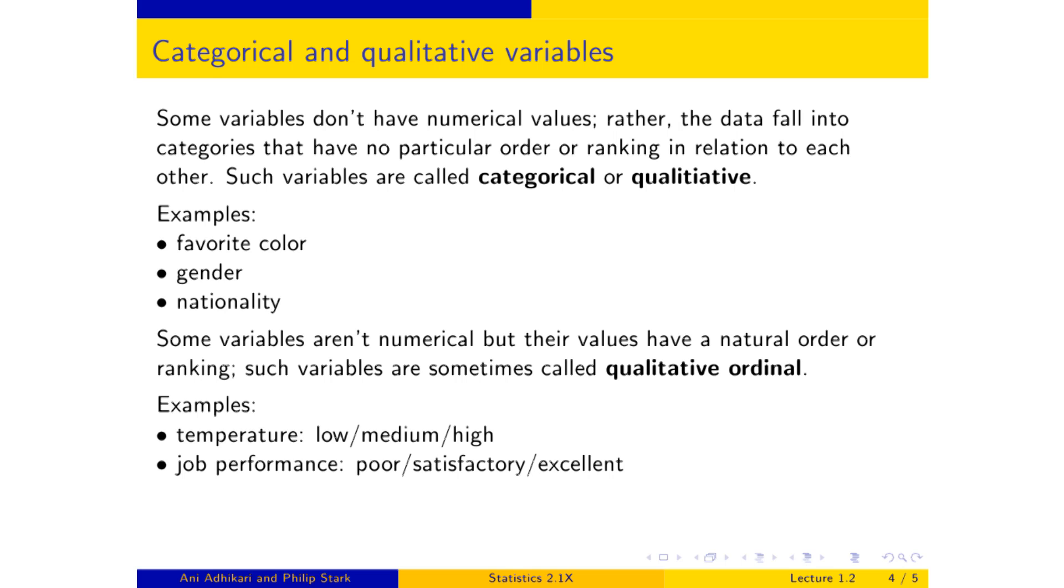If you measure job performance, poor, satisfactory, excellent, there's a clear ranking relative to each other. Such variables are called qualitative ordinal because their values have an order relative to each other.